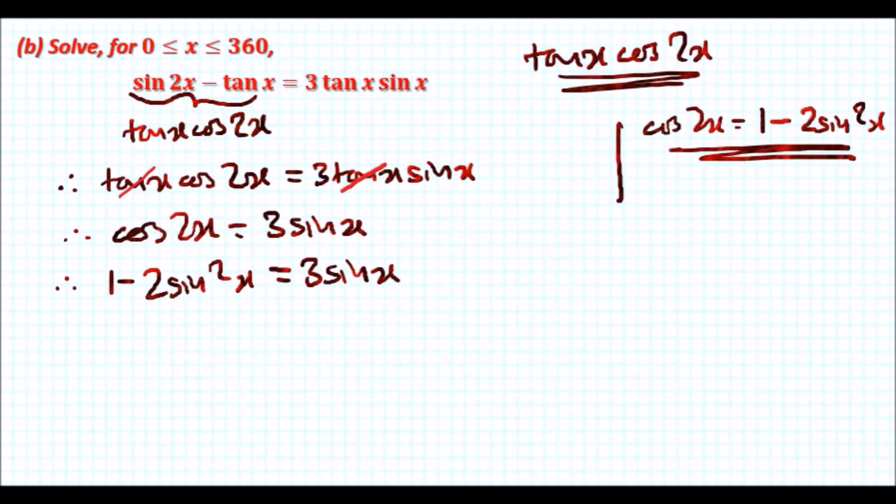Therefore we're going to have 1 minus 2 sin squared x equals 3 sin x. That's it. So let's put everything on one side, so it's going to look like a quadratic in terms of sin x. Plus 2 sin squared across and adding 1, we're going to be left with positive 2 sin squared x plus 3 sin x minus 1 equals 0.